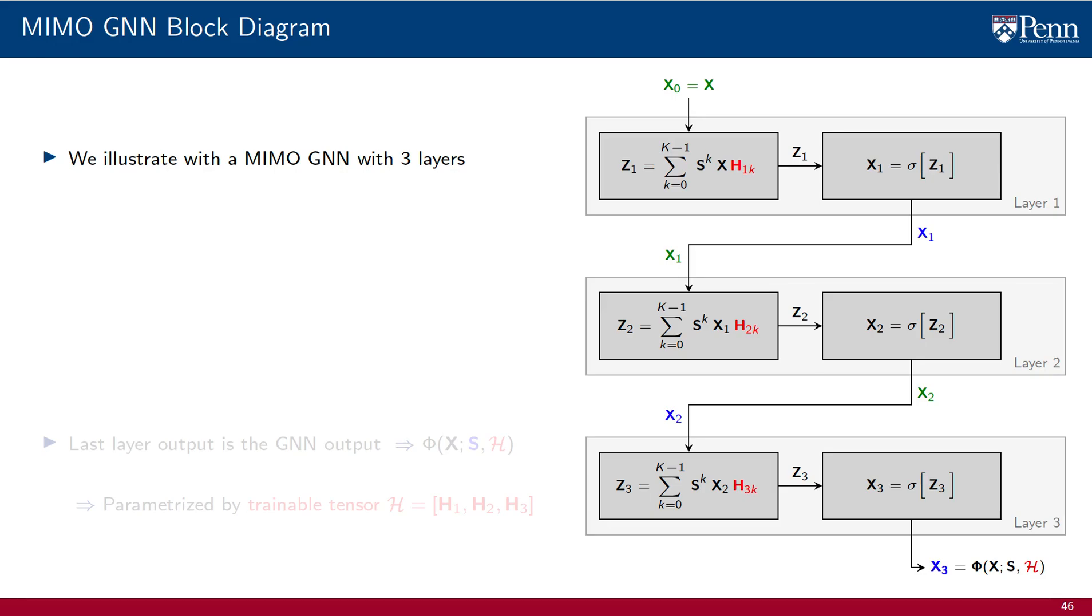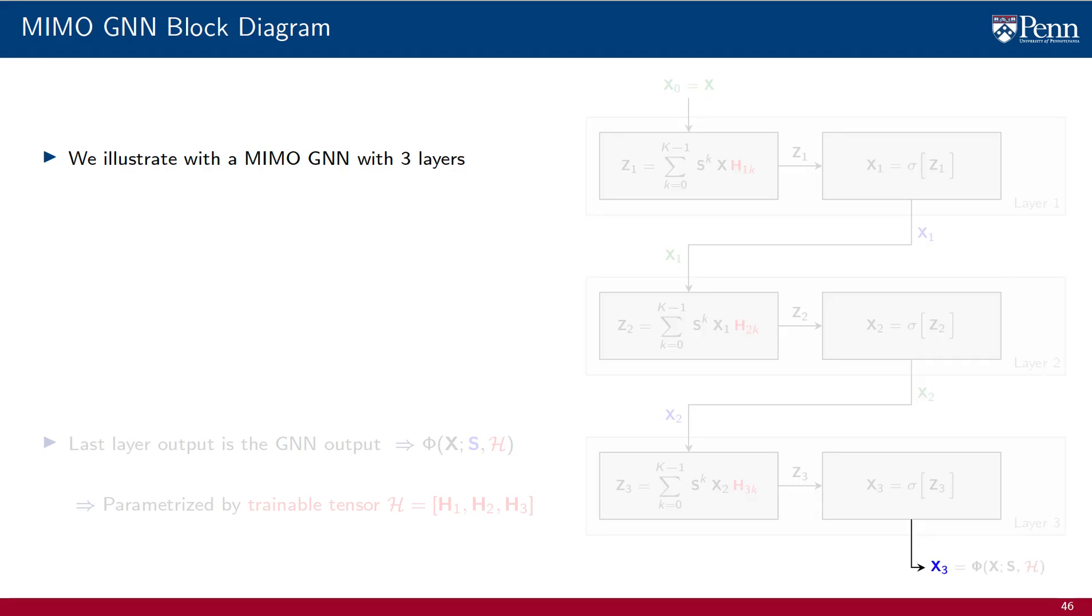We see the same in this block diagram of a MIMO GNN with three layers. It is the same diagram, except that layers have MIMO perceptrons. But, as in the case of the GNN and the FCNN, we begin by feeding the input graph signal X to layer 1. This could be a signal with multiple features. We denote the number of features as F0.